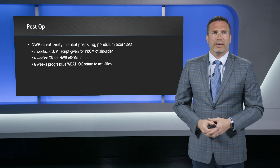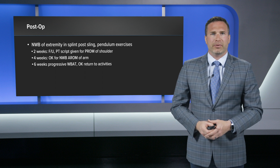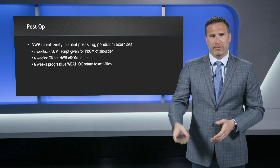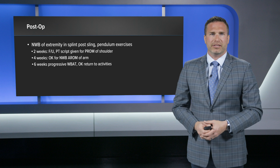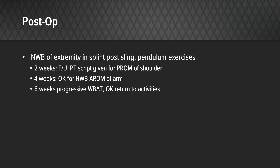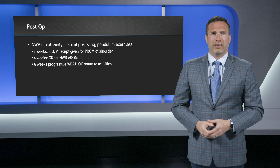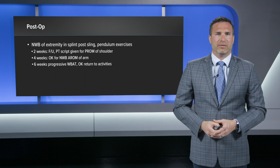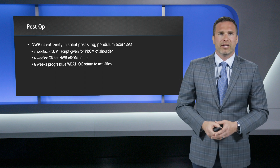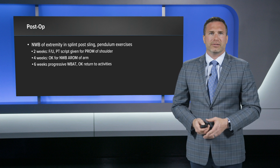Postoperatively, I made this patient non-weight-bearing and placed him in a postoperative sling. I had him perform pendulum exercises to keep stiffness down in his shoulder. He followed up in the office at two weeks, at which point I gave him a physical therapy script and allowed progressive stretching and passive range of motion of the shoulder. At six weeks, I allowed progressive weight-bearing as tolerated and return to activities. This is my typical postoperative protocol for clavicle fractures.